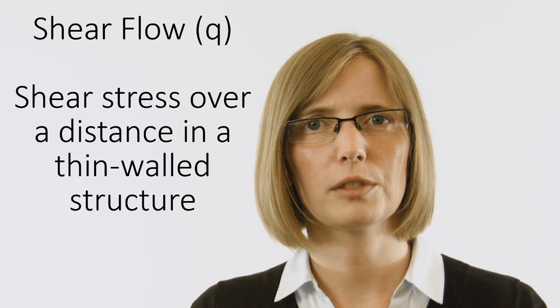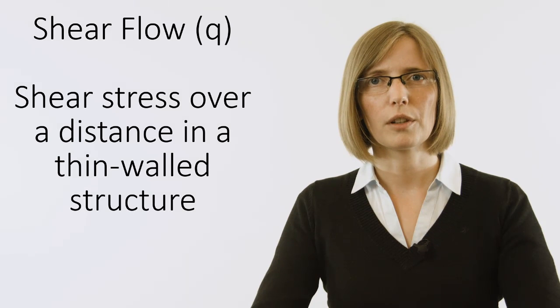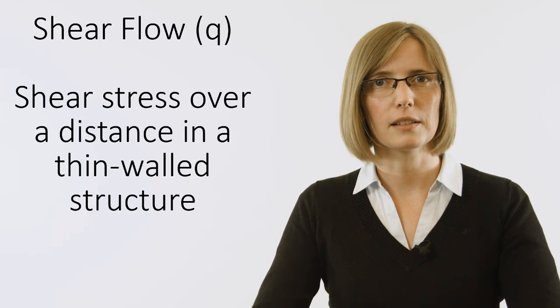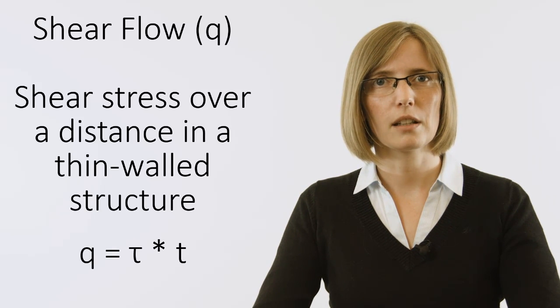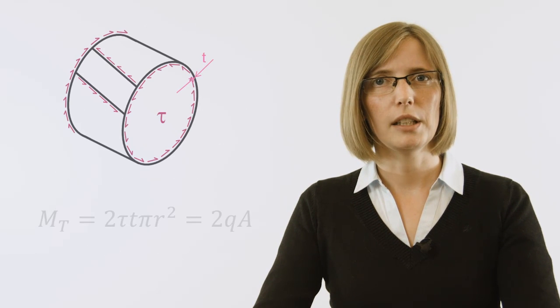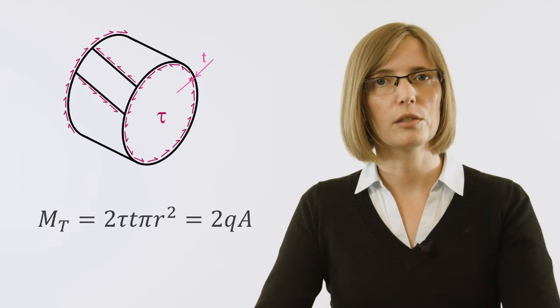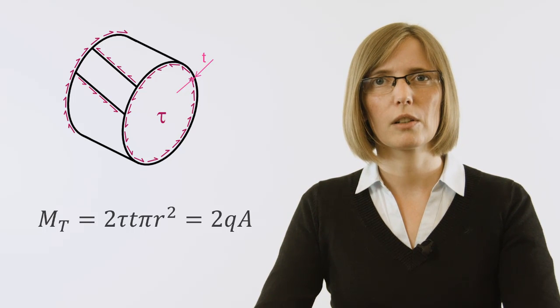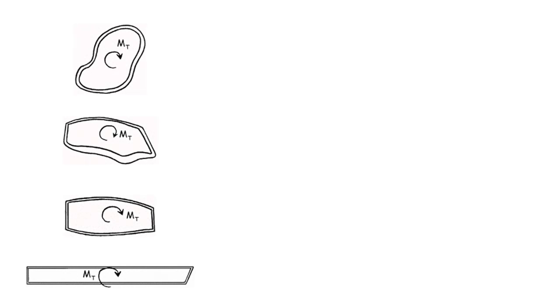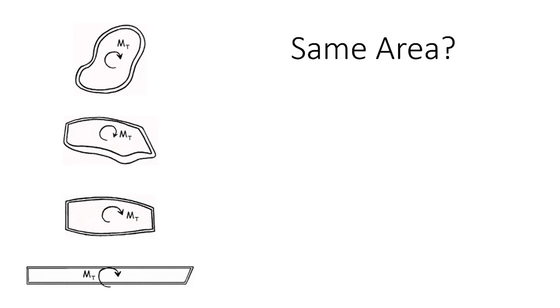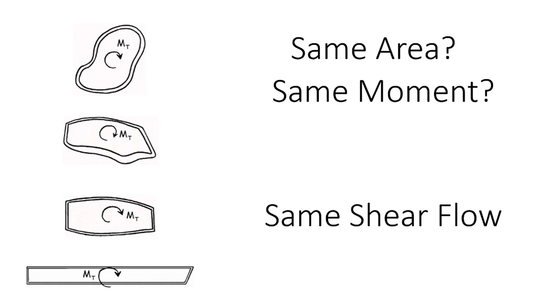I want to introduce a new definition: the shear flow q. It is defined as shear stress over a distance in a thin walled structure. For a thin walled structure, the shear stress distribution through the thickness can be neglected and assumed to be constant. The shear flow is the shear stress times the thickness of the structure. For our tube, the torsional moment is equal to twice the shear flow times the enclosed area of the tube. Our torsional moment causes a shear flow that is only dependent on the enclosed area A. This relationship can also be derived for other shapes of closed thin walled structures. When the enclosed areas are equal and an equal torsional moment is applied, the shear flow will be the same for all structures independent of their shape.